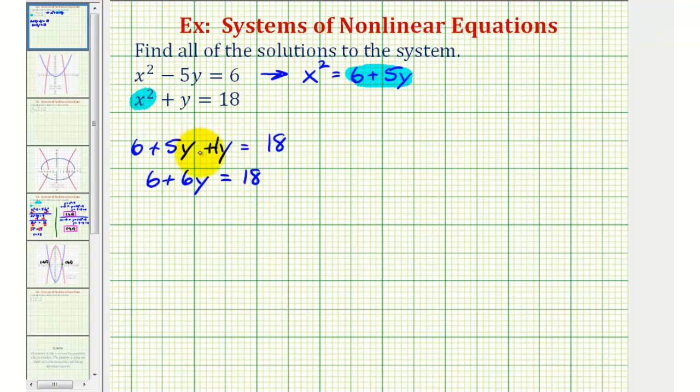Now to solve for y, we'll subtract six on both sides of the equation. This would give us six y equals 18 minus six is 12. Divide both sides by six, and we know that y must equal positive two.